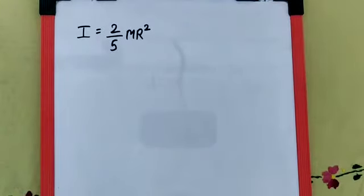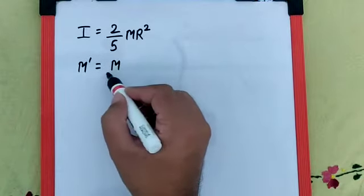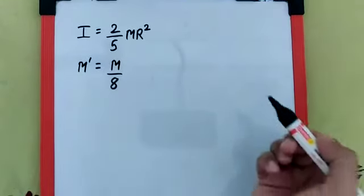What is the moment of inertia of the smaller sphere about its diameter? Now, if it is casted into eight identical spheres, the mass of each small sphere is going to be M/8.